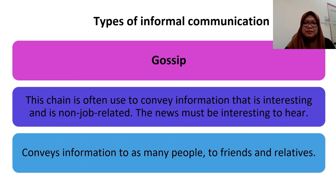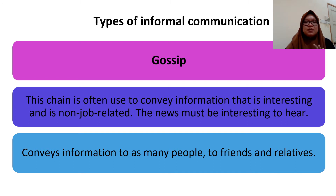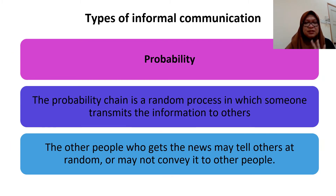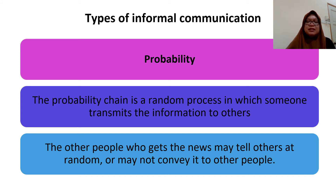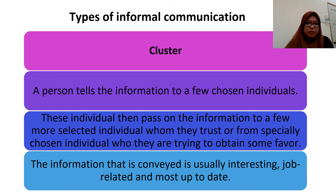The gossip type is used to convey information that is interesting and non-job related. One person conveys the gossip to as many people as possible — friends, relatives, everyone they know. The probability chain is a random process in which someone transmits information to others at random, not selecting specific people. Those who receive the news also tell others at random.